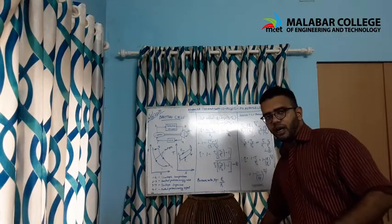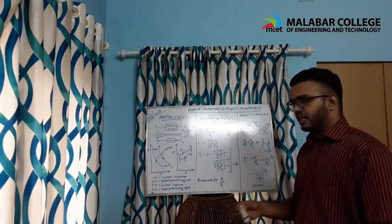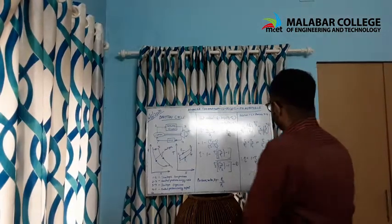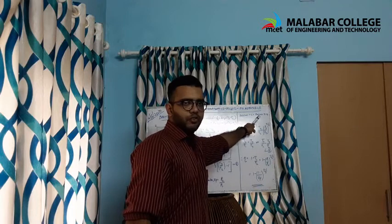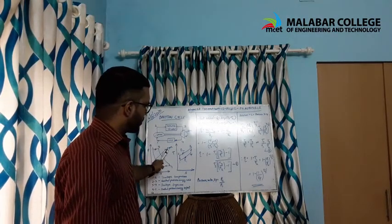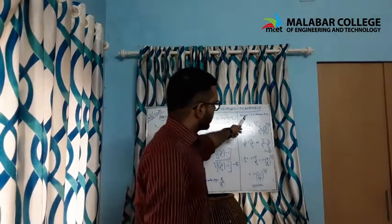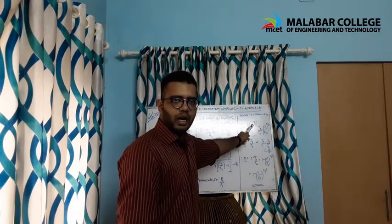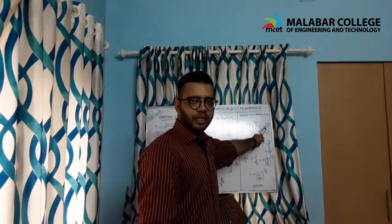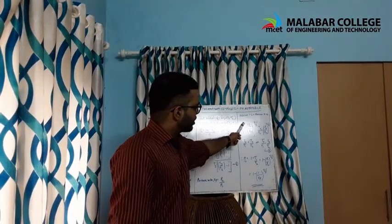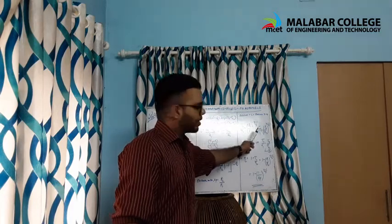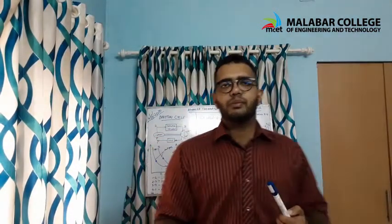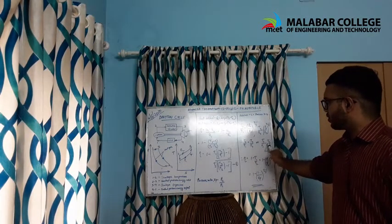The pressure ratio is defined as rp = P2/P1. Since processes 1→2 and 3→4 are both isentropic, we can write: T2/T1 = (P2/P1)^((γ−1)/γ) and T3/T4 = (P3/P4)^((γ−1)/γ). From this, T2/T1 = T3/T4, which means T4/T1 = T3/T2.